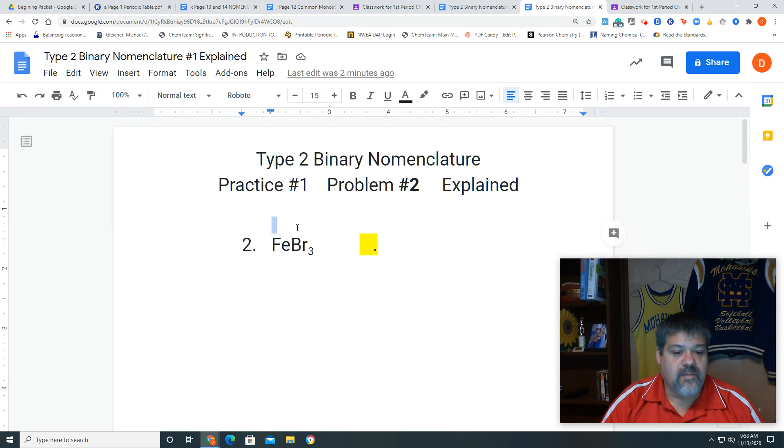So we know what the bromine is. If we remember from that sheet, it was a negative one. So if that's a negative one, we have three bromines, so my total charge for bromine is going to be negative three. Now, how did I get this? A negative one times three is a negative three.